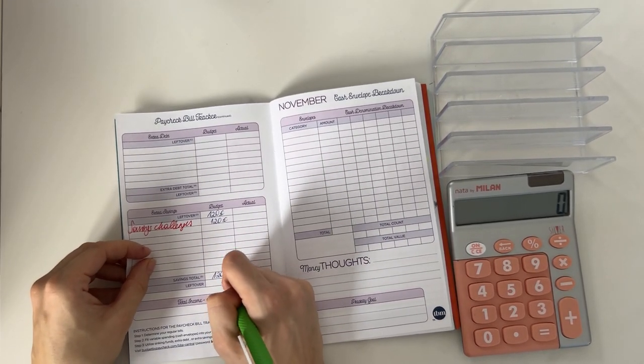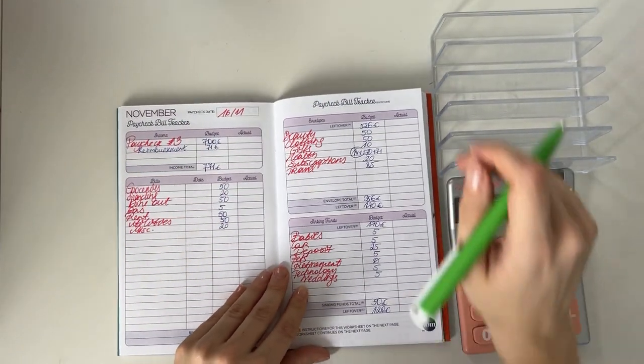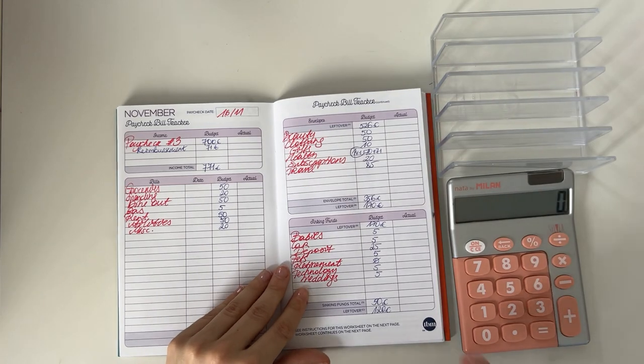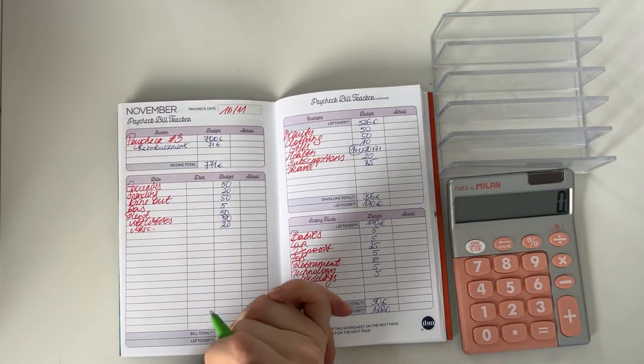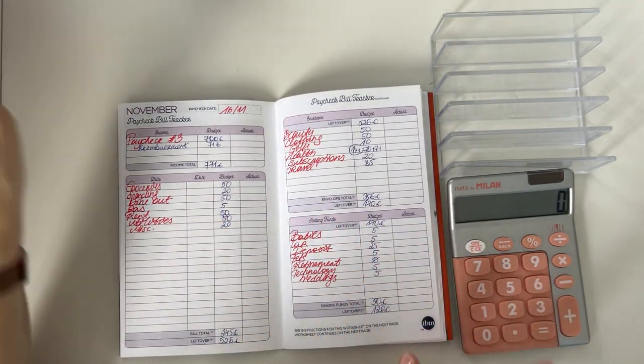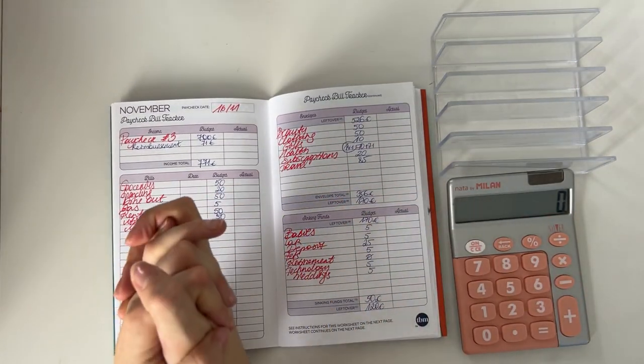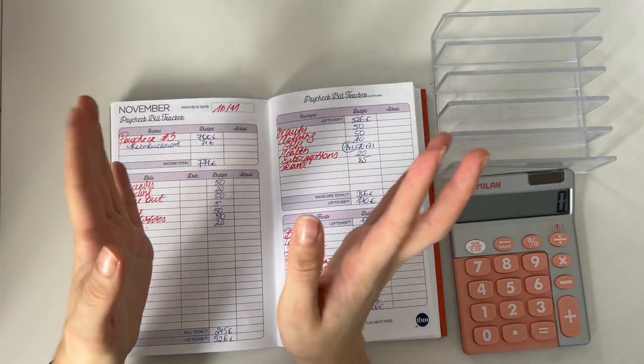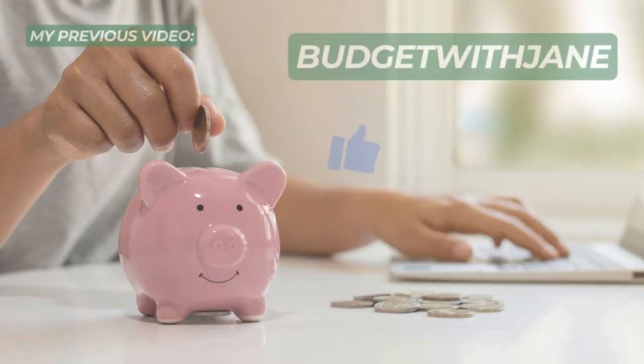And that means we have zero euros left to budget, which means that each euro of our income has a place to go into our budget. Great! So that was all for the weekly update budget video for today. I will be back tomorrow with the cash stuffing of this paycheck, so make sure to stay tuned for that one. But yes, in the meanwhile, I wish you a very wonderful day and I hope to see you next time. Bye!